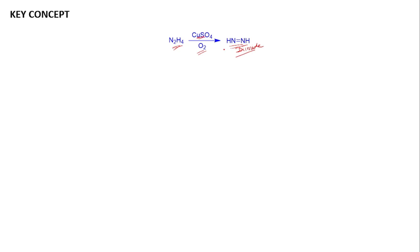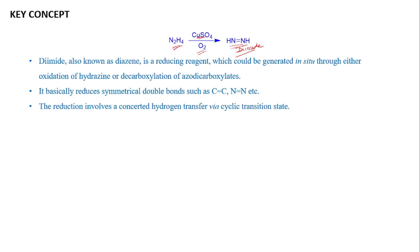What are the important features of this diamide reagent? Diamide is also known as diazene, which is a reducing reagent, which could be generated in situ through oxidation of hydrazine or decarboxylation of azodicarboxylates. It basically reduces symmetrical double bonds, such as C=C, N=N, etc.